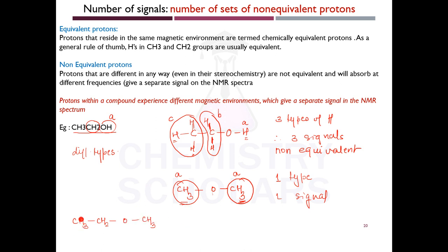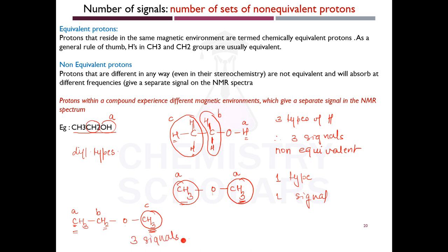For another example with CH3-CH2-O-CH3: this CH3 attached to CH2 is type A, the CH2 is type B, and the CH3 attached to oxygen is type C — because even though both ends are CH3, their environments are different. The first CH3 is attached to CH2, and the second CH3 is attached to oxygen. So there are three types of protons and three signals.